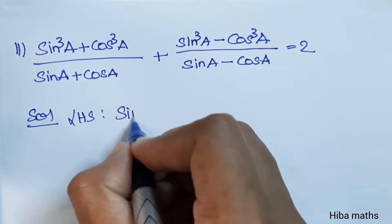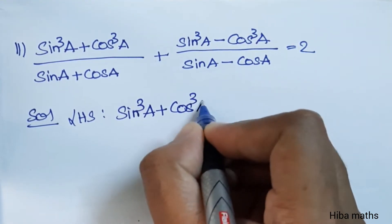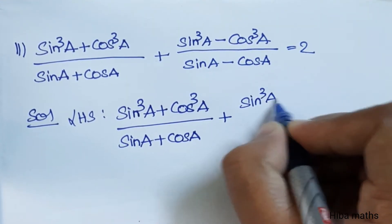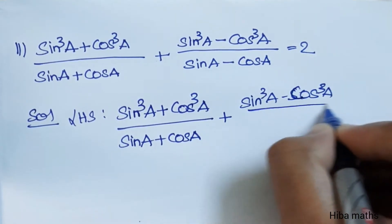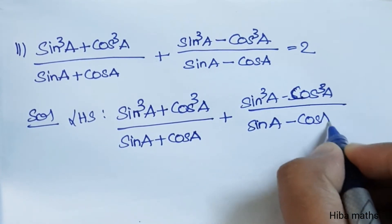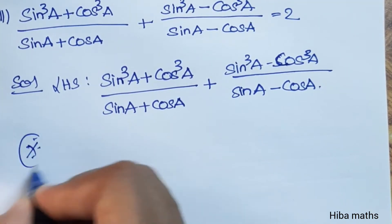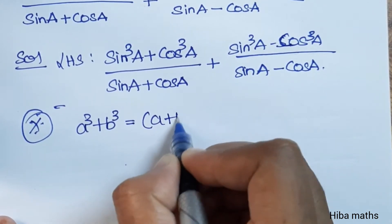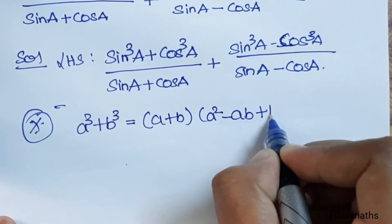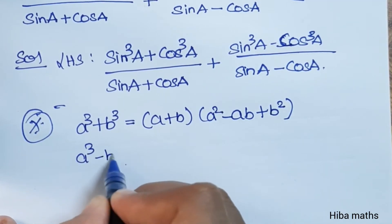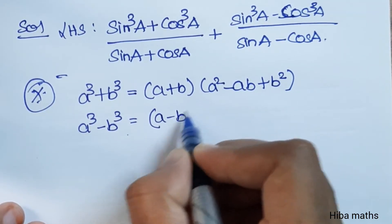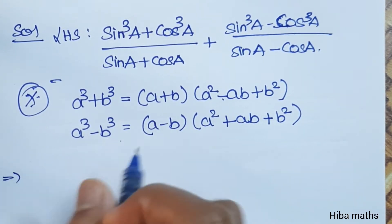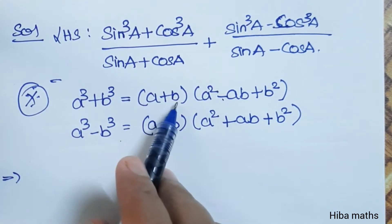We will use the formula: sin cubed A plus cos cubed A divided by sin cubed A minus cos cubed A. The a cubed plus b cubed formula expands as (a plus b)(a squared minus ab plus b squared), and a cubed minus b cubed expands as (a minus b)(a squared plus ab plus b squared). We will substitute these two formulas.